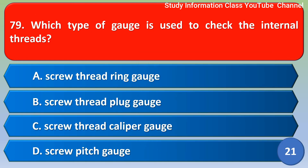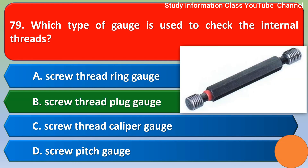Next question: Which type of gauge is used to check the internal threads? Out of the four options given, the correct answer is Option B, screw thread plug gauge.